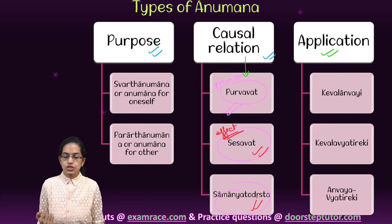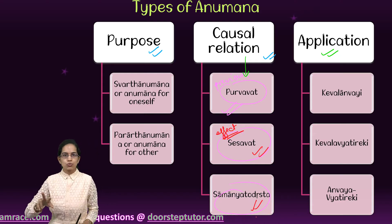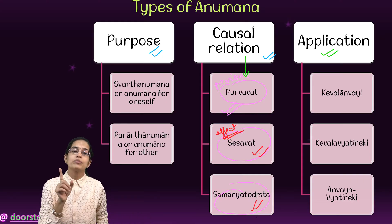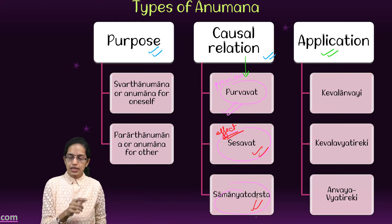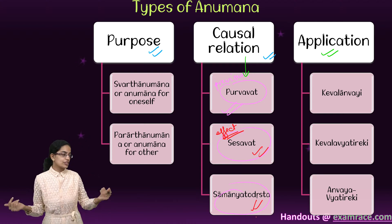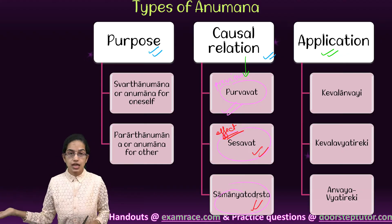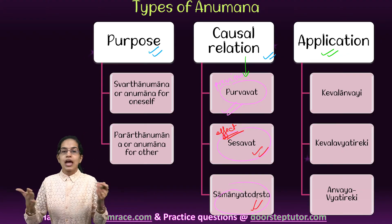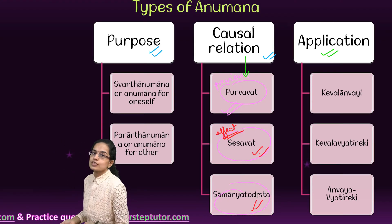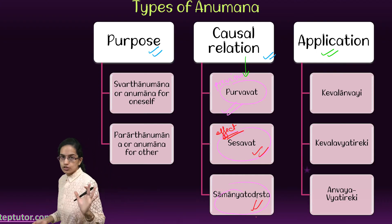The last causal type is samantiyodrasht, which means there is no direct relation between cause and effect — it is based purely on experience. For example, whenever I see ducks, I say there should be water nearby, because from experience whenever I have seen ducks I have seen water nearby. The two things coexist together based on experience, and therefore it is samantiyodrasht.